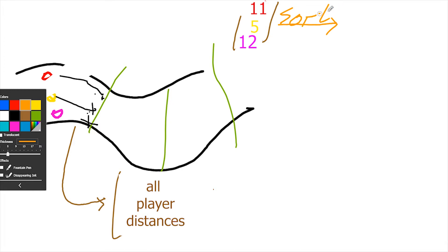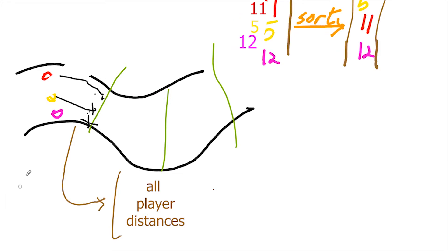After you sort the array, the array is going to look like this: rearranging the values in an order of ascending or descending order, depending on your preference. The array will look something like this, so the smallest number will be on top: 5, followed by 11, then 12.